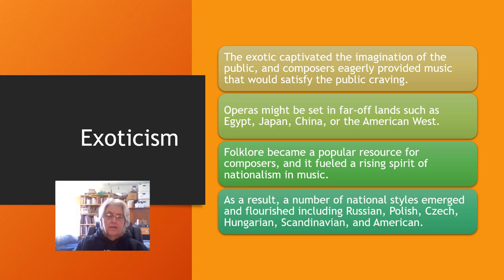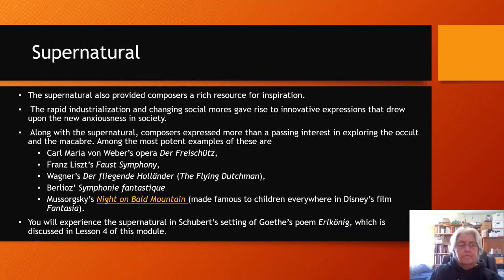Exoticism was a big thing in the 19th century during the Romantic era. People were traveling more and there was more ability to see exotic places, so music and arts became set in some of these locations. The public was wild about learning about places like Japan, China, or even the Western part of America. We saw folklore becoming important and nationalism was growing. There was also a big interest in the supernatural, which inspired a lot of composers and artists. Industrialization also gave rise to some new anxiousness in society, and people were expressing that.